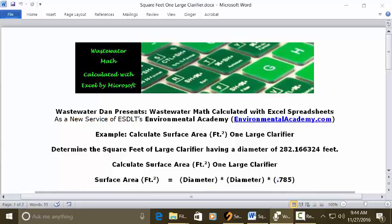Today's example calculates surface area FT2 of large clarifier. Today's problem reads: determine the square feet of large clarifier having a diameter of 282.166324 feet.